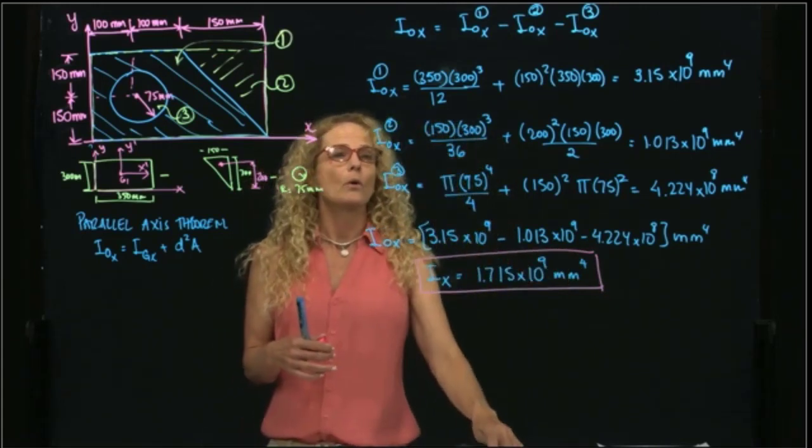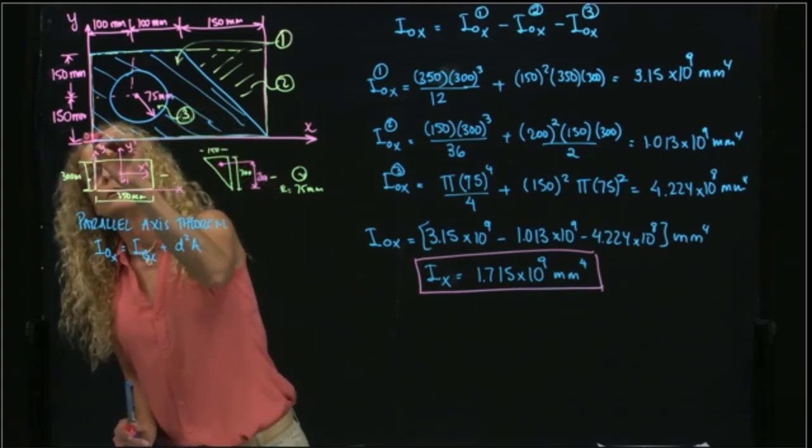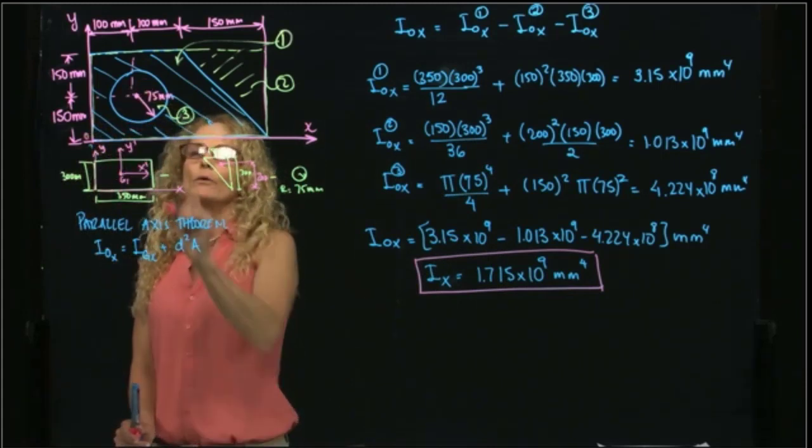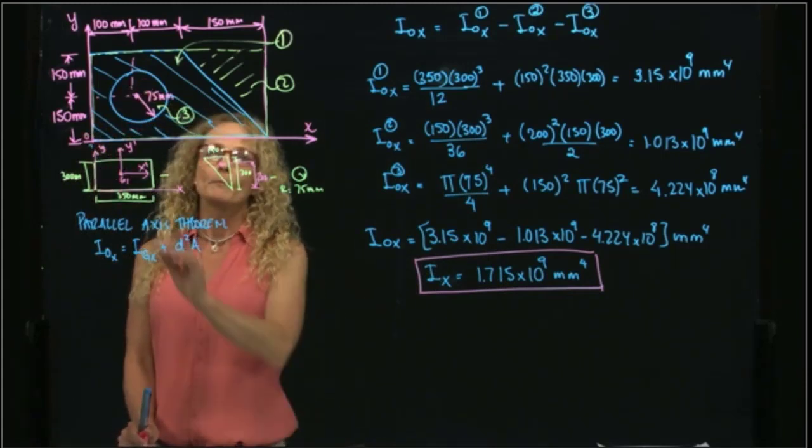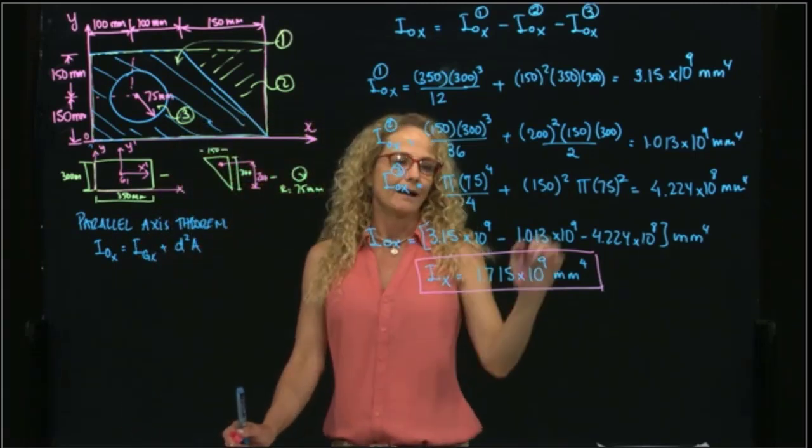And the value that I get is equal to 1.715 times 10 to the ninth millimeters to the fourth. Since this is valid for all the x-axis, of course, I use the value of O, which is the origin of my coordinate system, but it's important to understand that this is valid for all the x-axis.